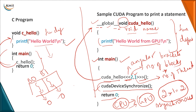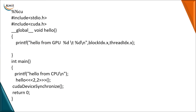The basic difference is that whenever you call a function, after your function name you have three angle brackets with number of blocks and number of threads. In addition to printing a statement, I also want the thread ID and block ID to be printed. If you want a block ID to be printed it is blockIdx.x, and for thread ID it is threadIdx.x.